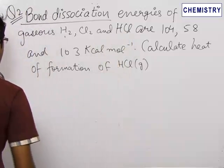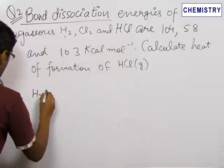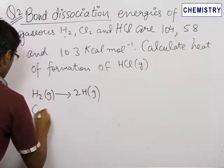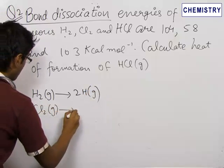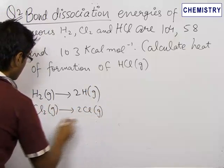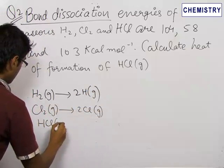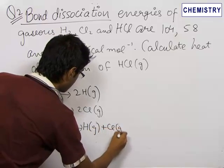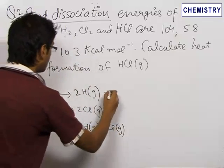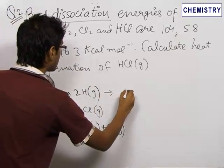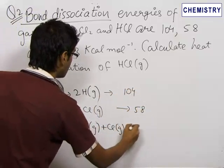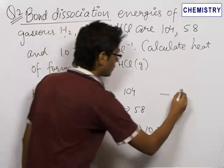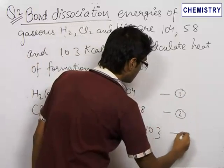Writing the equations for the dissociation of H₂, Cl₂, and HCl, we get: H₂(g) → 2H with ΔH = 104 kcal/mol; Cl₂(g) → 2Cl with ΔH = 58 kcal/mol; and HCl(g) → H(g) + Cl(g) with ΔH = 103 kcal/mol. These are the first, second, and third equations.